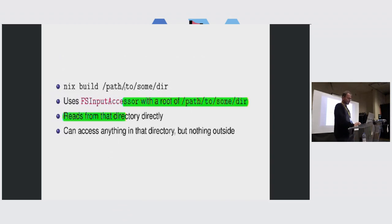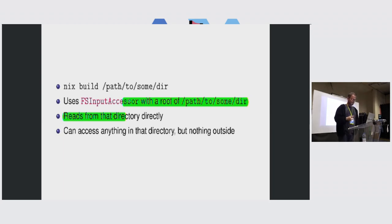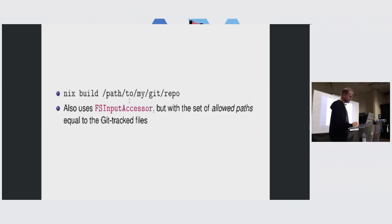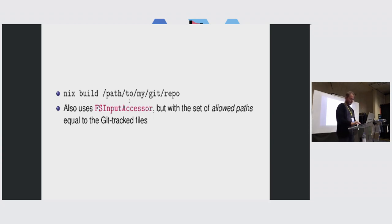For example, suppose I'm evaluating something from the local file system but not a git work tree — a path flake — that will use the FS input accessor with the top of my flake as the root. The FS input accessor applies access control, so if you try to do ../ to escape out of the root, that doesn't work. This ensures that you cannot gain access to something that is not part of the flake. Git work trees are also implemented using the FS input accessor, but with a set of files that you're allowed to access — in the case of a git work tree, that is the files that are under git control. So if you try to access a file that doesn't exist, it can give you a useful error message.